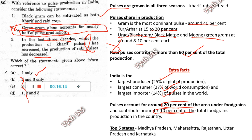The five major pulse-producing states in India: imagine Madhya Pradesh in the center — to the left is Maharashtra, further left-north is Rajasthan, to the right is Uttar Pradesh, and below is Karnataka. These are all in the central region of India and are the highest pulse production states. This is extra factual information useful for both prelims and mains.